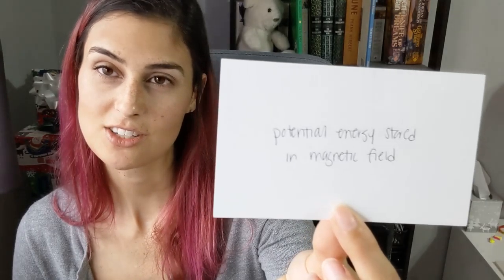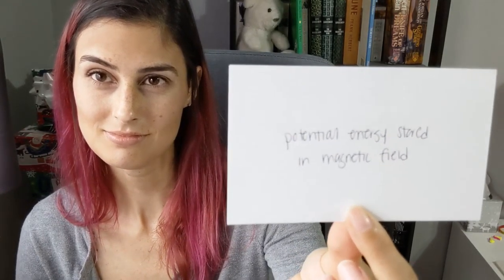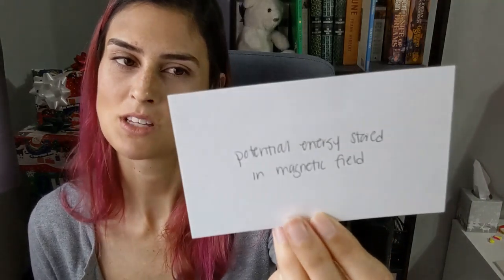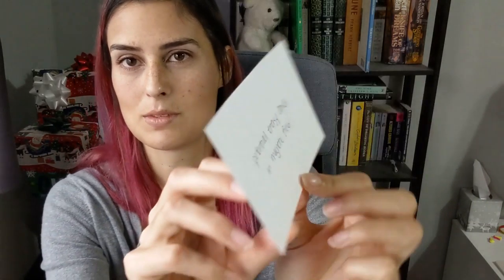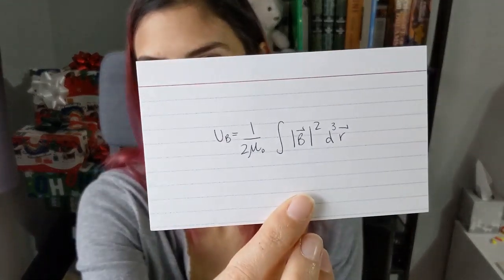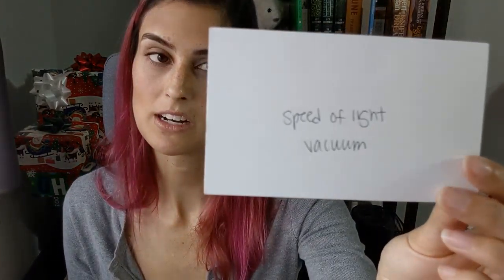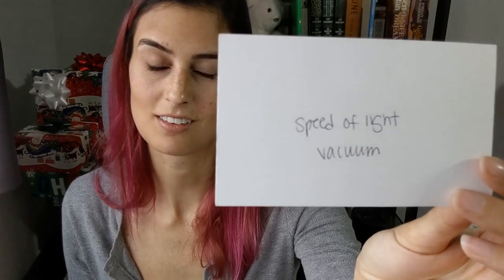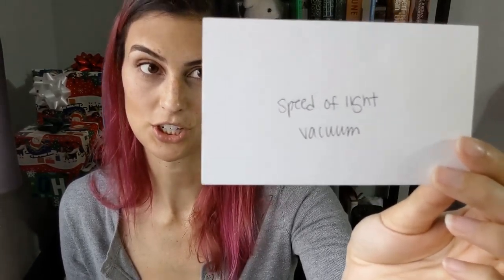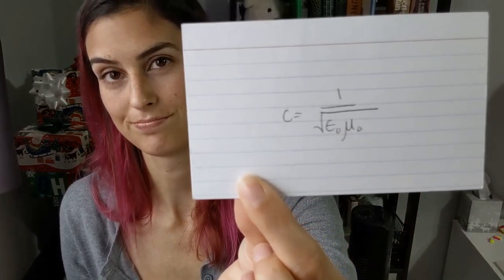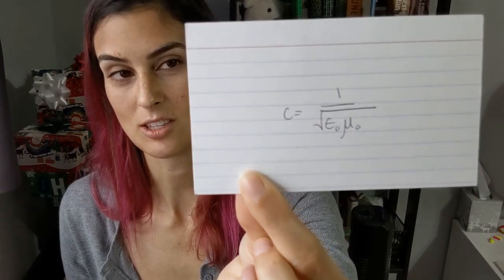The potential energy stored in a magnetic field: U sub B equals 1 over 2 mu naught times the integral of the magnitude of B squared times the volume element. Speed of light in a vacuum — looking for an expression, not a numerical answer: C equals 1 over the square root of epsilon naught mu naught, which helps you remember how epsilon naught and mu naught are related.